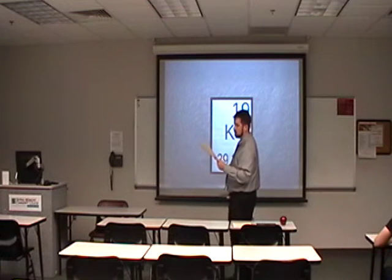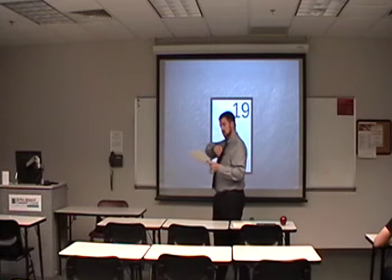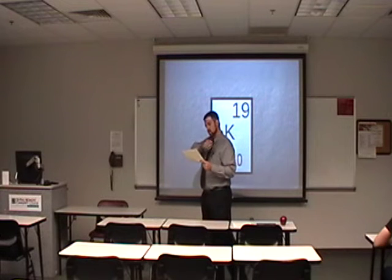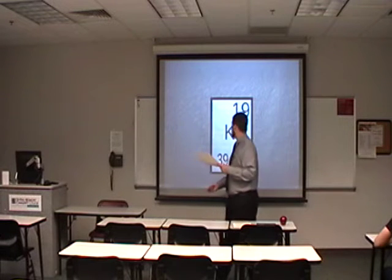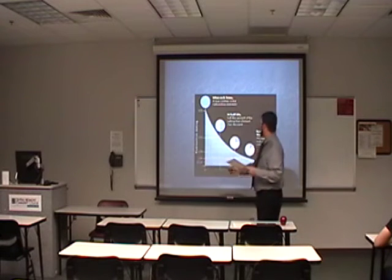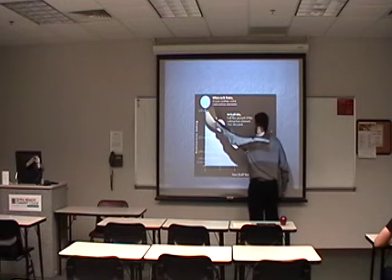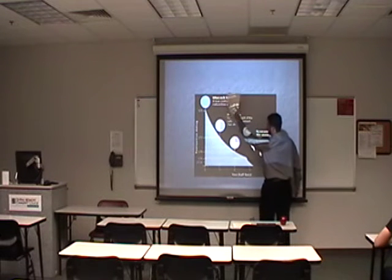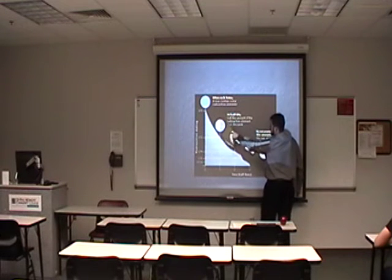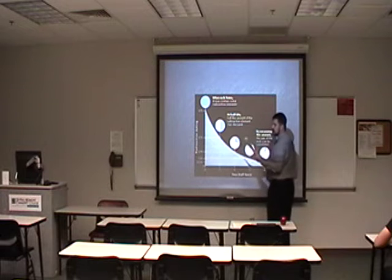The half-life is once every 1.26 billion years. That means if you start off with a finite amount, at 1.26 billion years you have half as much.